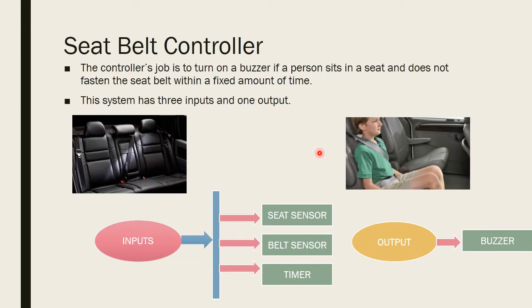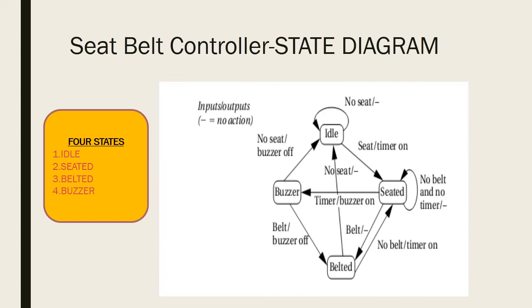This is the overall principle behind the Seat Belt Controller. Now we are going to draw the state diagram. The Seat Belt Controller state diagram consists of four states: the first is the idle state, meaning no person is sitting in the seat. The second is the seated state, when the person sits. The third is the belted state, when the person puts on the belt. The fourth is the buzzer state, when the buzzer sounds.